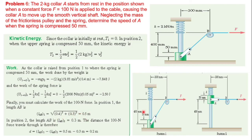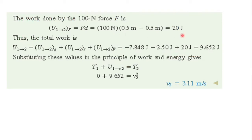The displacement due to force F is 0.5 meters. The original length is 0.3 meters, so the difference is 0.5 minus 0.3, giving a displacement of 0.2 meters. The work done by force equals force times 0.2.